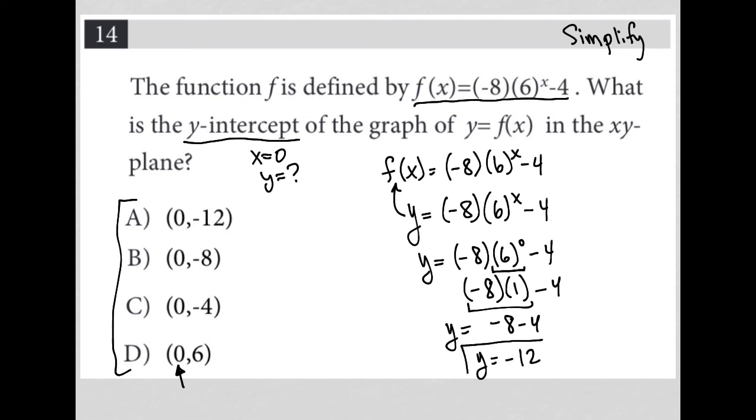My y-intercept is y equals negative 12. The ordered pair for that y-intercept is 0, negative 12. Therefore, the correct answer here is choice A.